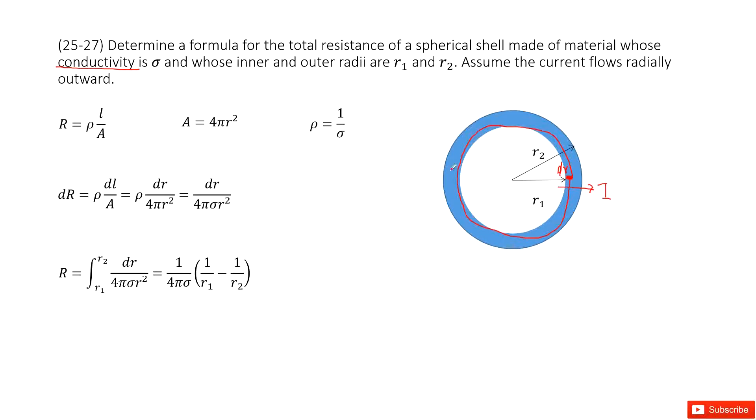The small fraction's resistance, we can write it as dR equal to rho, which is a constant, times dL divided by A. For this small fraction, we can write it as dr divided by 4 pi r squared.